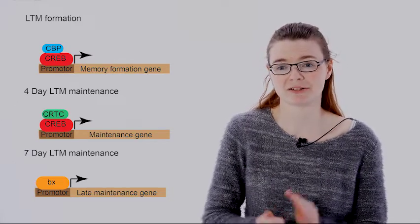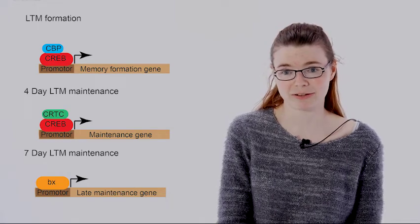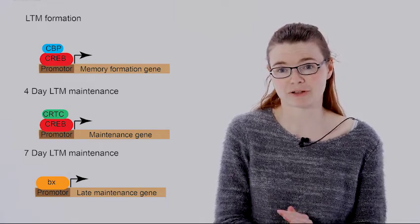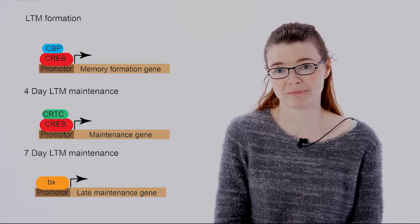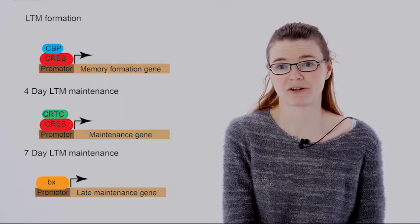Considering that memory formation and processing is really conserved throughout evolution and that CREB uses the same co-factors in mammals, it's quite likely that a similar mechanism is also occurring in mammals. But we do not know yet which transcription factor could be important in mammals for regulating the maintenance of memories.